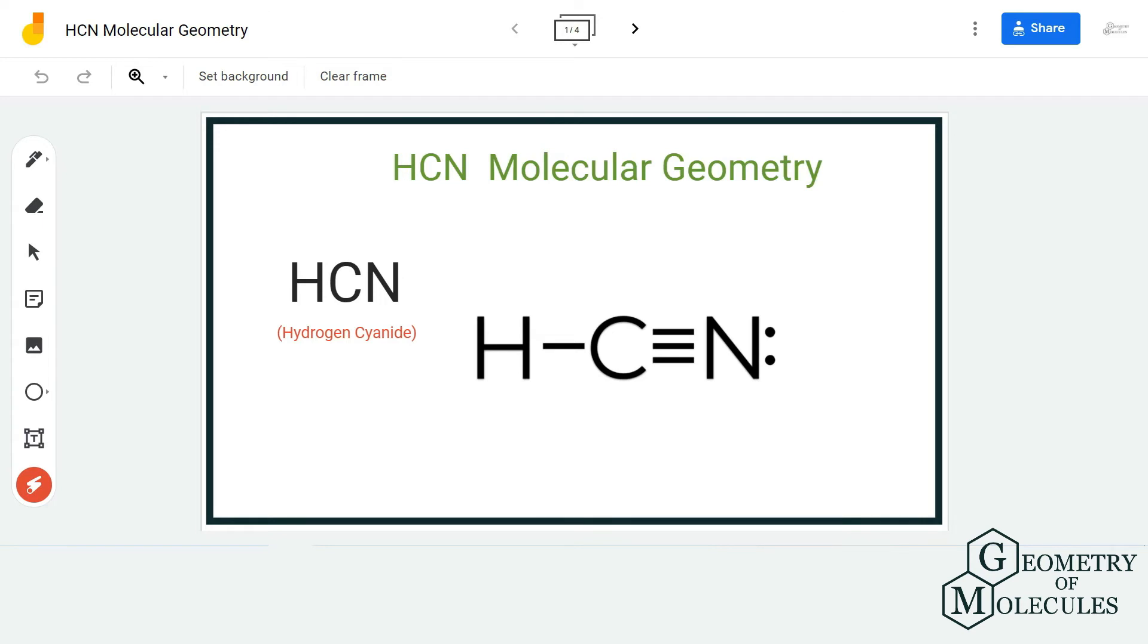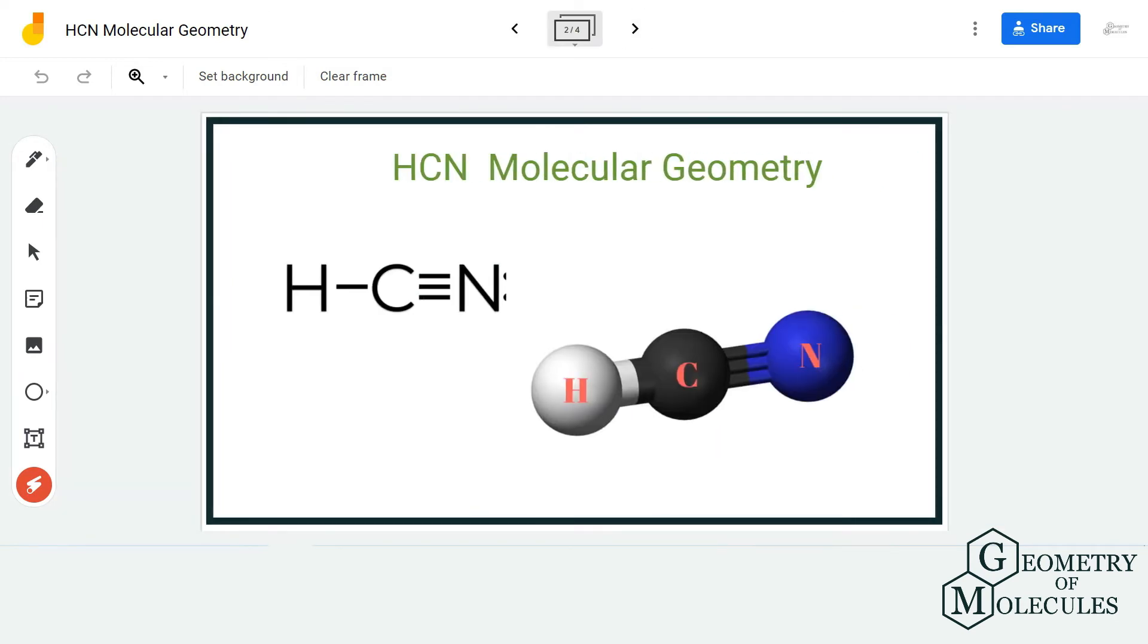Now if you look at this molecule in its 3D shape, you can see that all these atoms in the molecule are arranged in a single plane, and the geometry is linear. But you have to confirm it using AXN notation.